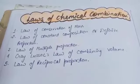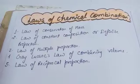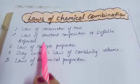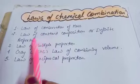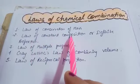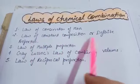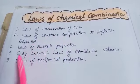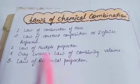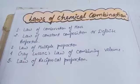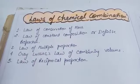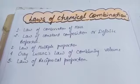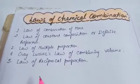We have five laws in Laws of Chemical Combination. First is the Law of Conservation of Mass. Second is Law of Constant Composition or Definite Proportion — that's the same thing. Third is Law of Multiple Proportion. Fourth is Gay-Lussac's Law of Combining Volumes. Fifth is Law of Reciprocal Proportion.